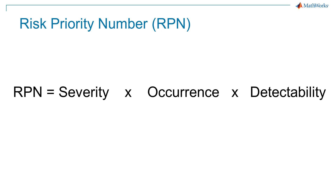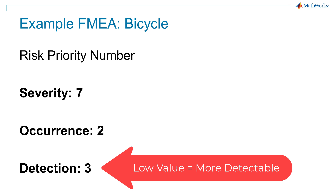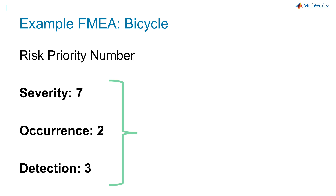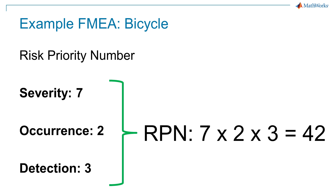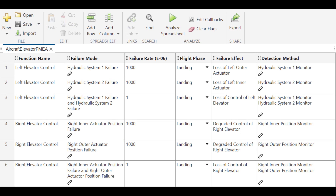How would we prioritize this failure mode? Let's quickly calculate a risk priority number, or RPN. This is simply the product of the failure mode's severity, occurrence rate, and detectability, using a scale from 1 to 10 for all three. Let's say the severity is a 7, the occurrence or probability is a 2, and the detection score is a 3. That gives us an RPN of 42, which is moderately high. This is just a simple example of one failure mode and a handful of data points. Most FMEAs will include many more data points, often columns in a spreadsheet.